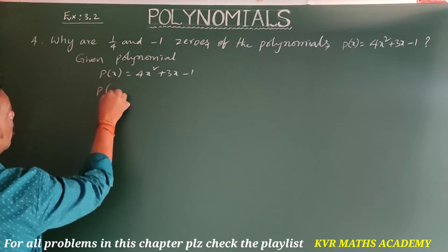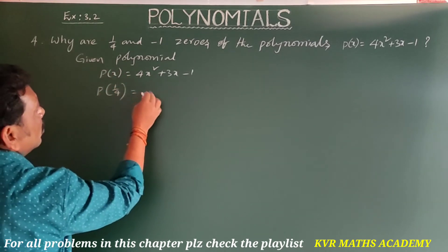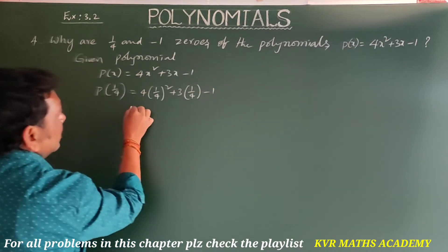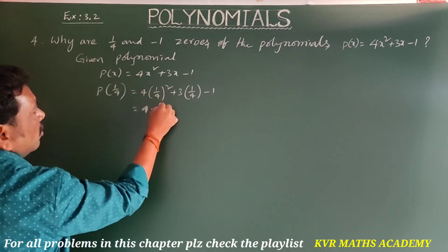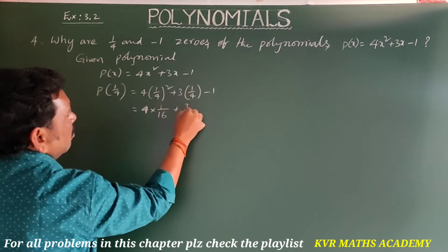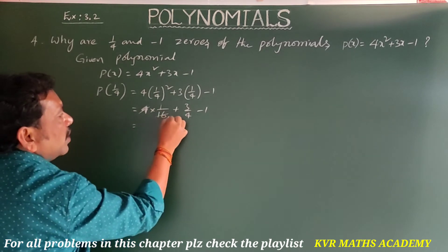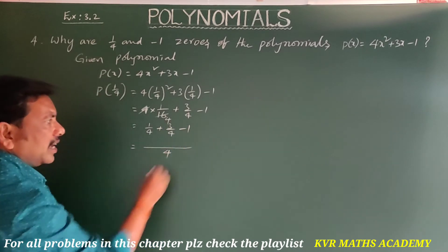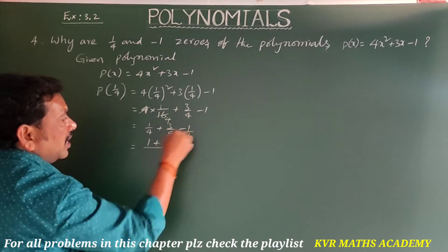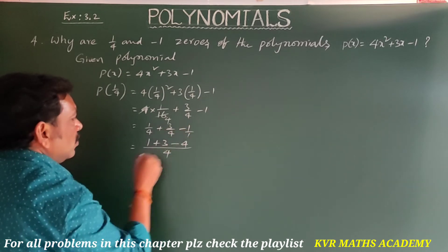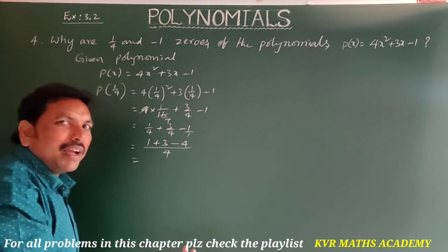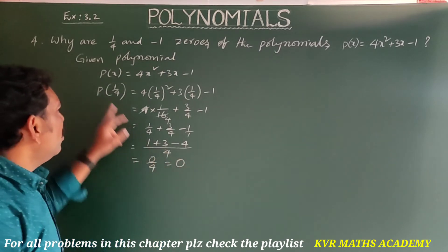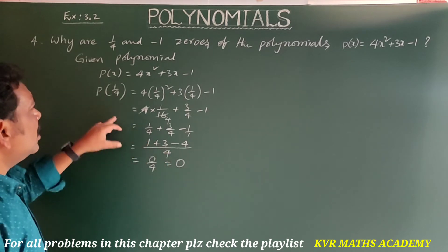Given polynomial: p(x) = 4x² + 3x - 1. Substituting x = 1/4: p(1/4) = 4 × (1/4)² + 3 × (1/4) - 1 = 4 × 1/16 + 3/4 - 1 = 1/4 + 3/4 - 1. LCM is 4: (1 + 3 - 4)/4 = 0/4 = 0. So p(1/4) = 0.